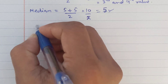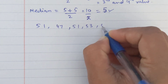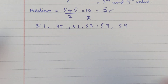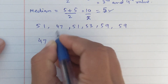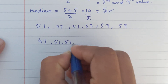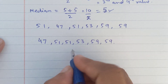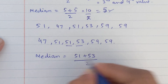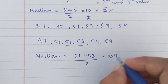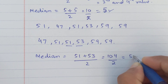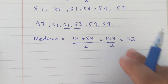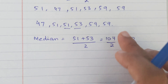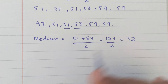Now for the second set: 51, 47, 51, 53, 59, 59. Again we have 6 numbers, so 2 middle values. We rearrange in ascending order: 47, 51, 51, 53, 59, 59. The 3rd and 4th values are 51 and 53. We add them: 51 + 53 = 104, divided by 2 equals 52. The median is 52. Note that 52 does not belong to the actual data set, but that's fine — the median doesn't have to.